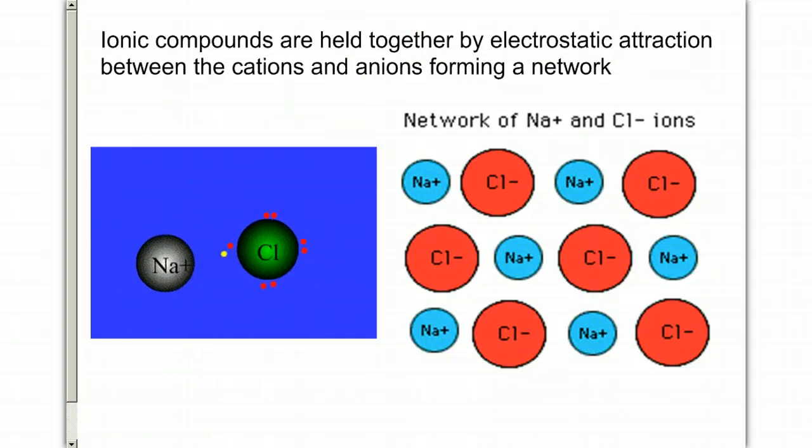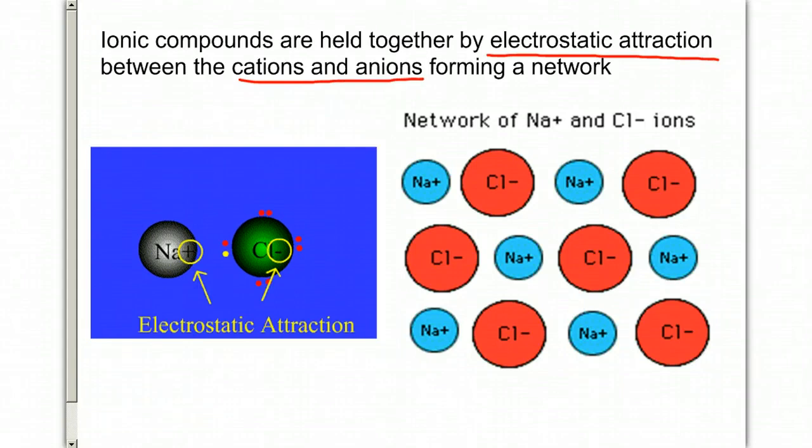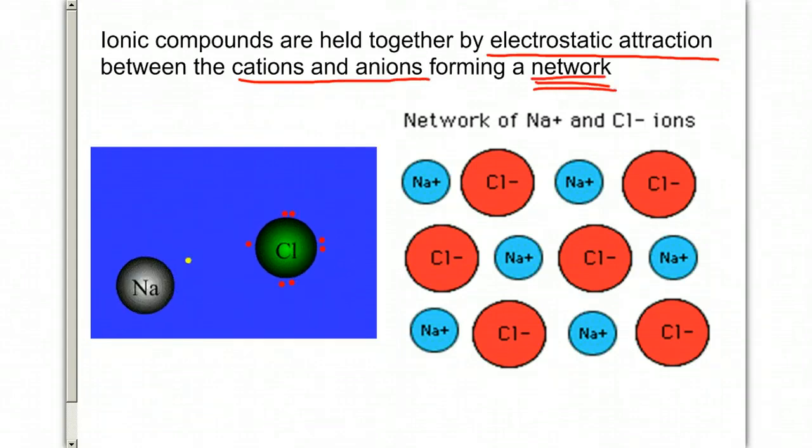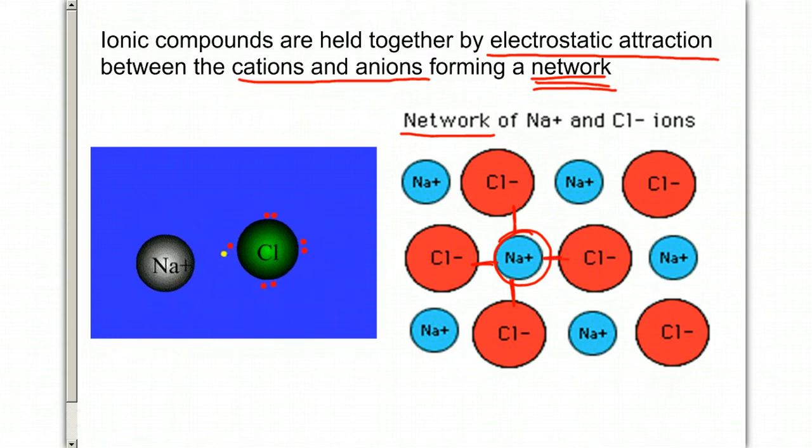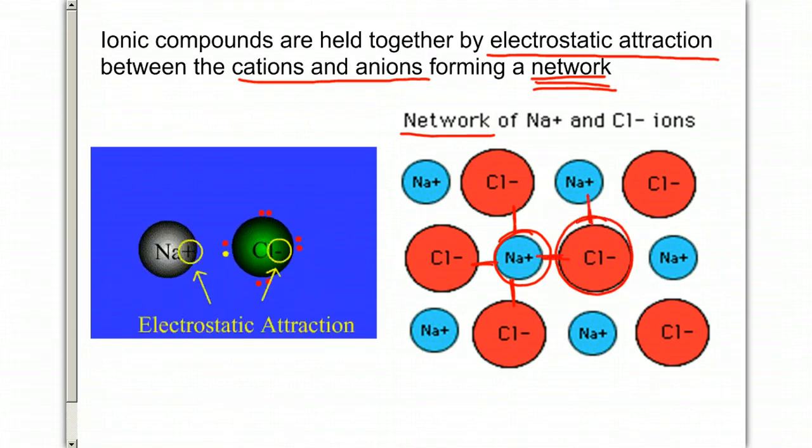Ionic compounds are held together by what's known as electrostatic attraction. This is between the cations and the anions, and they form what's known as a network. Here's an example of a two-dimensional network where you have a sodium atom, and it's surrounded by all chloride atoms, and then here you have a chloride, and it's surrounded by all sodium.